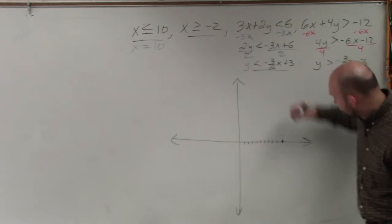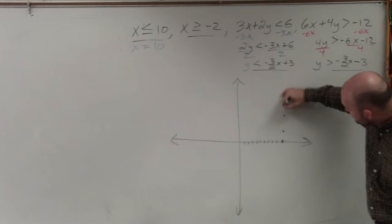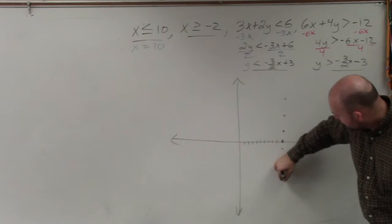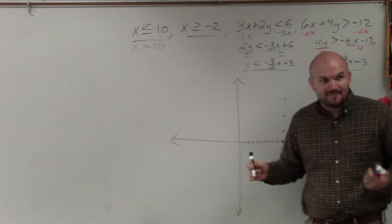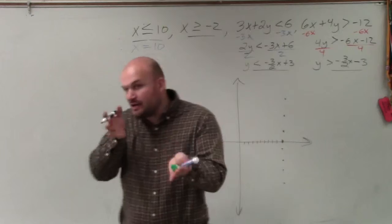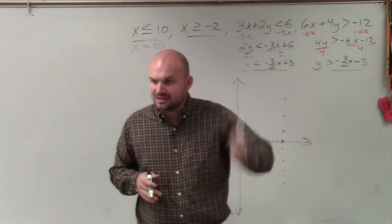x equals 10 when y equals 0, x equals 10 when y is positive, x equals 10 when y is negative. It doesn't matter what the point, what y value is, x is always equal to 10. So when x is equal or greater than or less than, it's going to produce a vertical line.